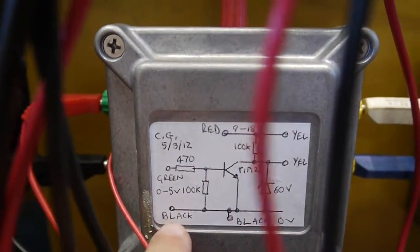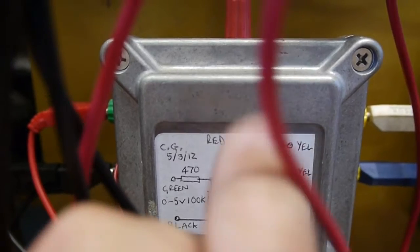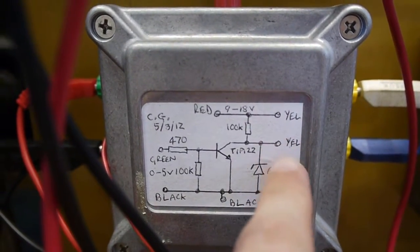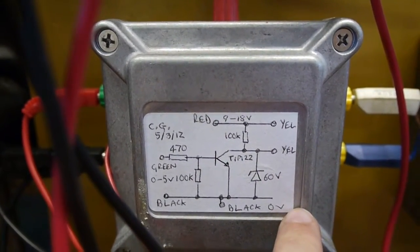We take a 5 volt input and output a 12 volt signal to drive the fuel injector.